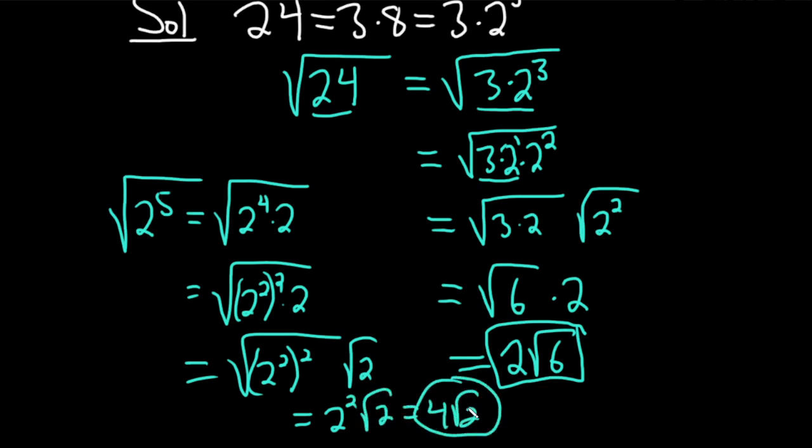That was pretty quick. But that's the idea, is you basically want to write it as a product of primes. In this case, it was already a product of primes. And you write it as a quantity squared. Because when you have something squared and you take the square root, it's going to go away. Good luck.